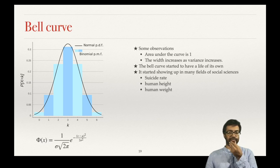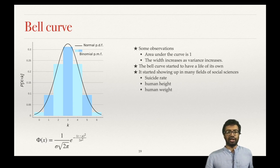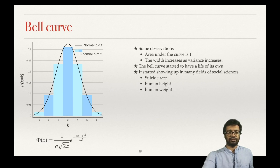It shows up in many other areas like human height, weight — not just human, like animal heights and weights. There is something natural about the bell curve that makes it come up everywhere. That is why people became very curious about the bell curve and wanted to know what kinds of social and scientific phenomena satisfy it. We are going to see many more applications of the bell curve.